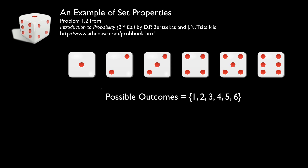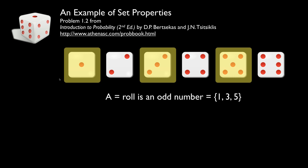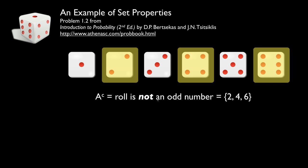For rolling this simple six-sided die, the six possible outcomes are the faces showing one, two, three, four, five, or six dots. Set A contains the odd numbers: one, three, five. The complement of A contains all outcomes that are not odd numbers: two, four, six.